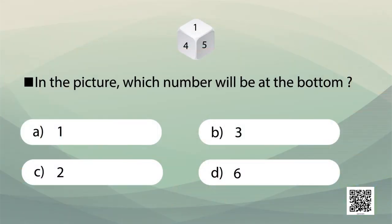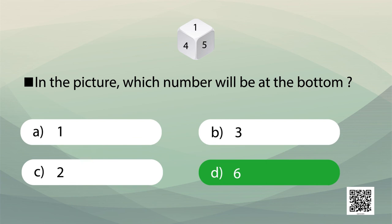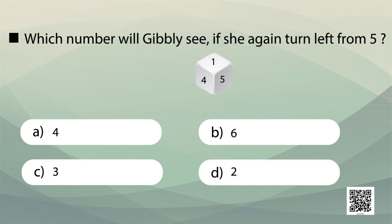Next question: in the picture, which number will be at the bottom? The number at the top is one, so which number will be on its opposite side — one, three, two, or six? The right answer is six, because one plus six equals seven. Another question: which number will Ghibli see if she turns left from five? The right answer is three.